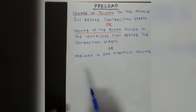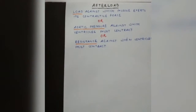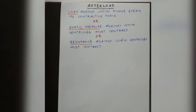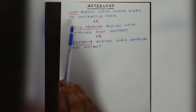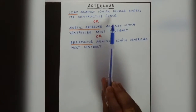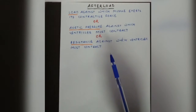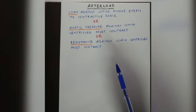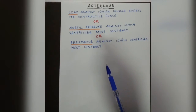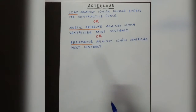So preload is nothing but the end diastolic volume — the volume of blood present in the ventricles just before contraction starts. Now coming to afterload. What is afterload? Afterload is the load against which the muscle exerts its contractile force — the load against which the muscle works to produce contractile force. That load we call afterload.